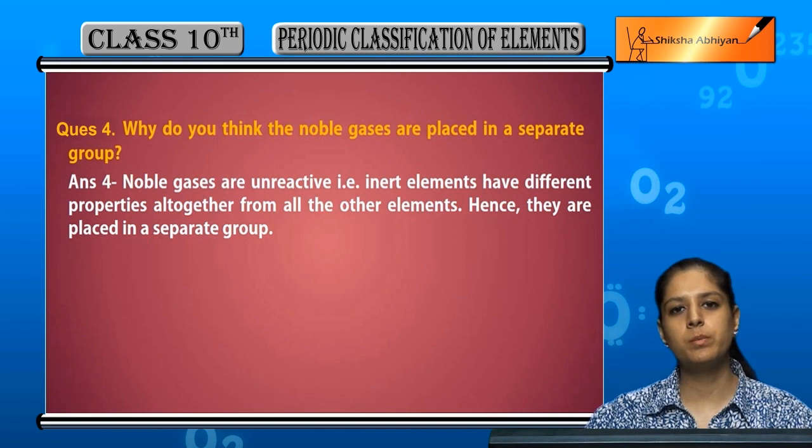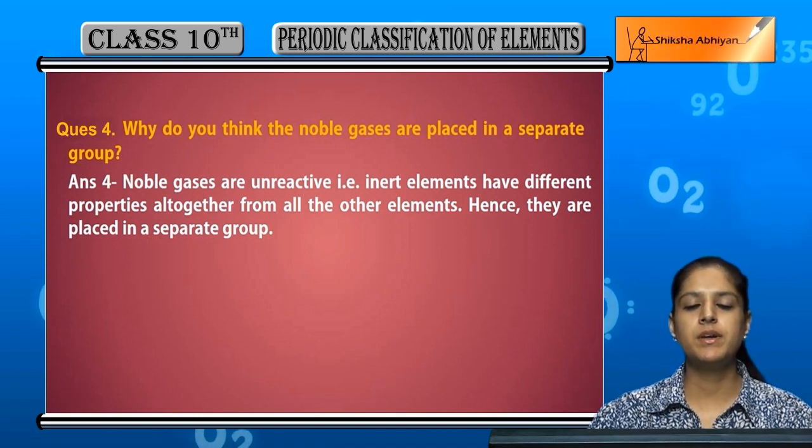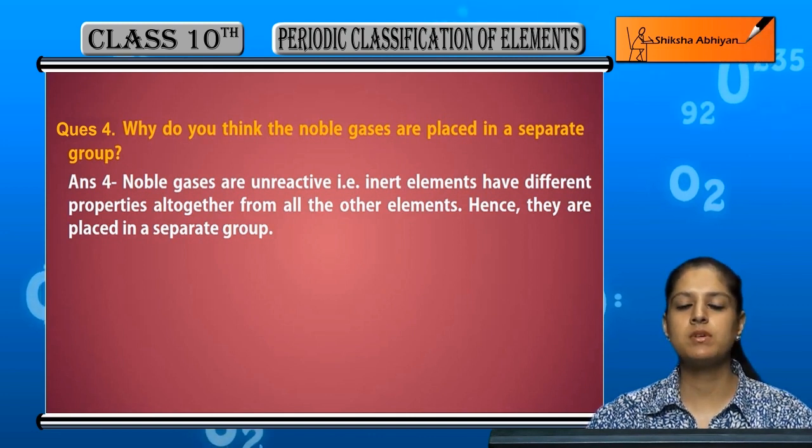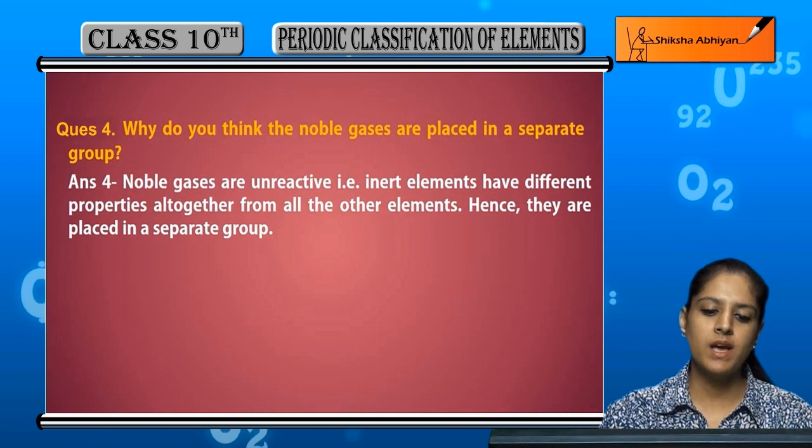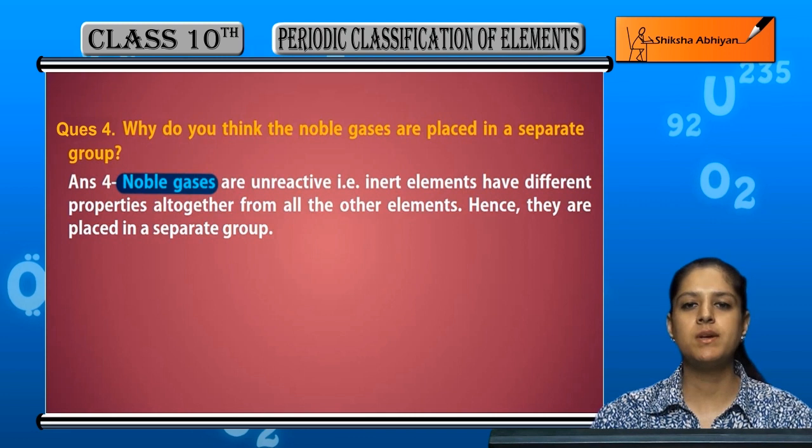Noble gases are placed in a separate group. If any element is placed in a group, it means that its properties are distinct. Noble gases are placed in a separate group because the noble gases are different from all other elements.